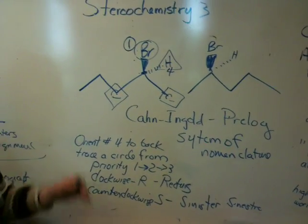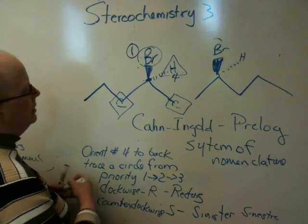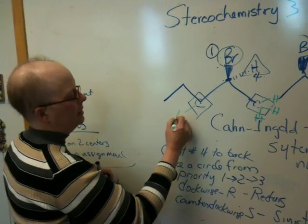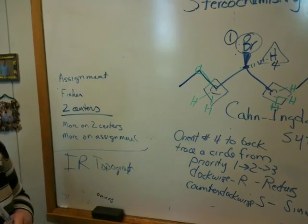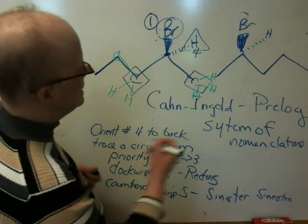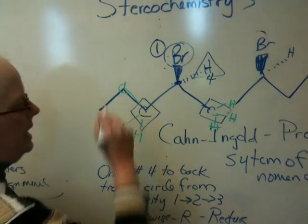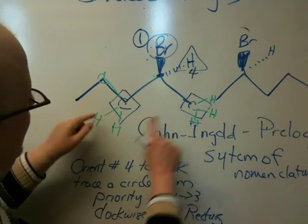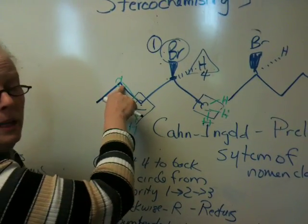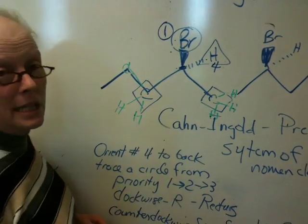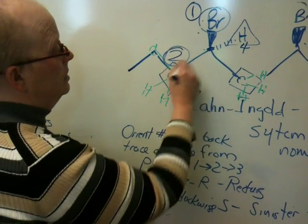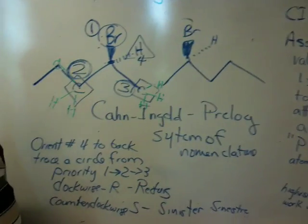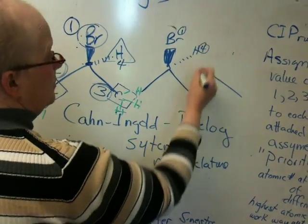When there's a tie, you have to work your way out to the next level. The next level out on one carbon would be three hydrogens. The next level out on the other would be two hydrogens and another carbon. At the next level out we are comparing HHH to HHC. It's not accumulation of mass — it's just the first point of difference. Comparing one by one: carbon versus hydrogen — this carbon has a higher atomic number than this hydrogen, so this gets the higher priority. So this is number 2, and this is number 3.